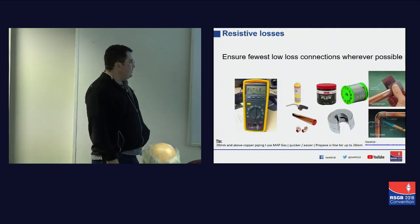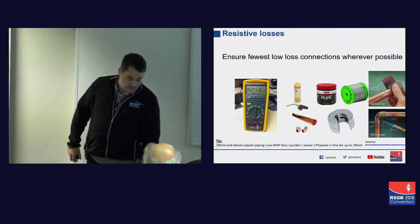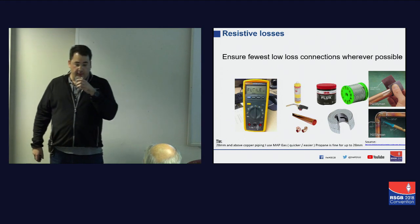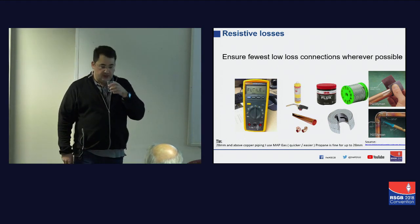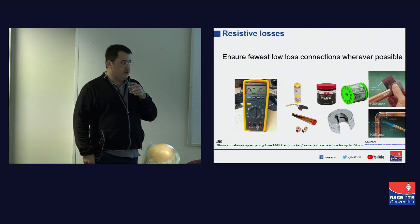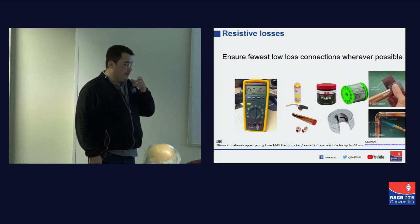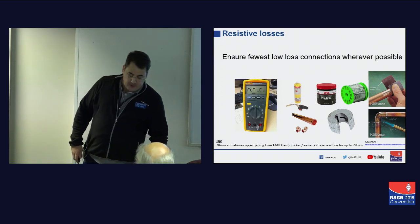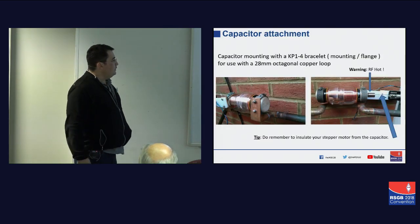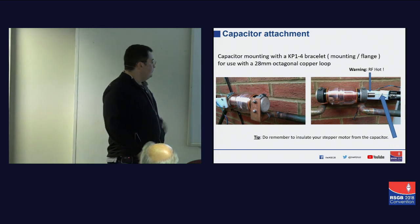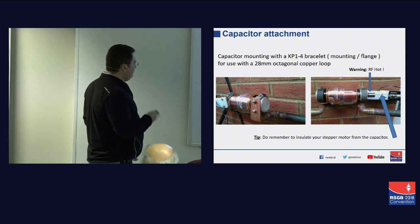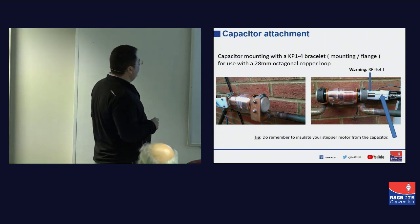Resistance is futile — and it really is. There's a link in there if you've never done any soldering of copper pipes. I would recommend propane up until 28mm, and anything from 28mm and above I'd use MAP gas. The trick is to make sure your connections are all clean. I'm good at many things — mechanically, not so much — so forgive some of the jagged edges on various things.